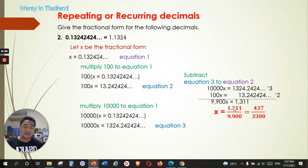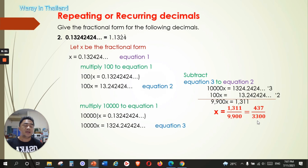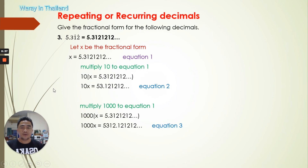We divide 1311 by 9,900, giving x = 1311 over 9,900. Dividing both by 3: 1311 ÷ 3 = 437, and 9,900 ÷ 3 = 3,300. So the fractional form is 437 over 3,300. That's the fractional form of this repeating decimal.